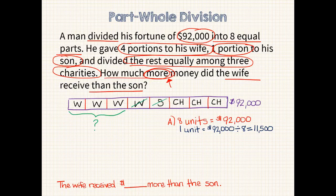I think I'd be satisfied with even one share of this gentleman's fortune. What about you? The final step is to calculate how much more the wife received. Since she received 3 more units, 3 times $11,500 equals $34,500. The wife received $34,500 more than the son.